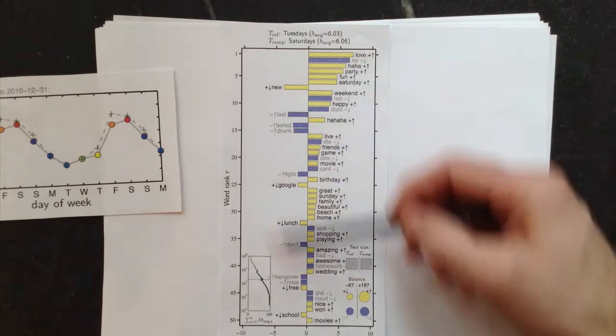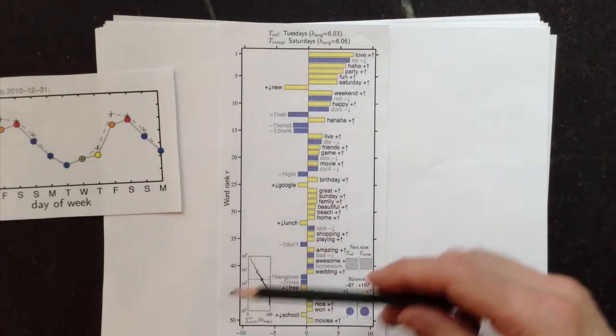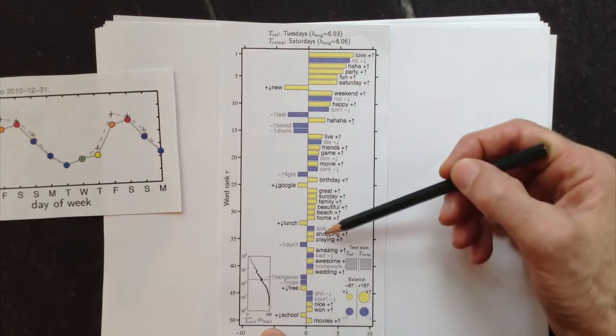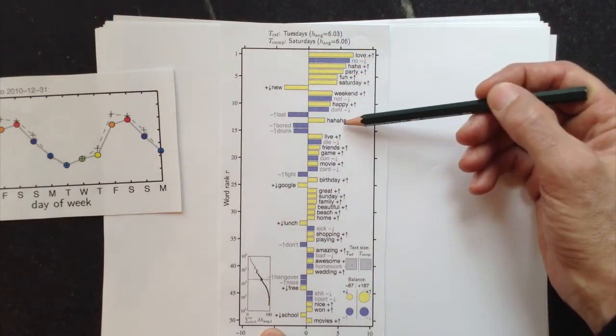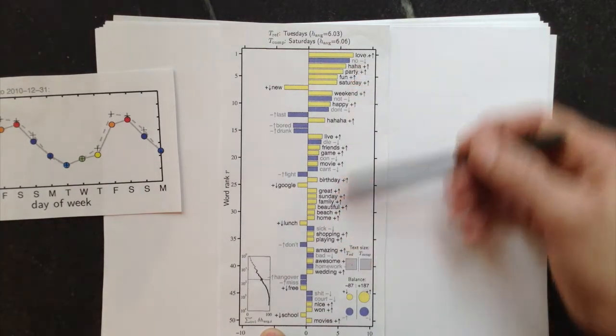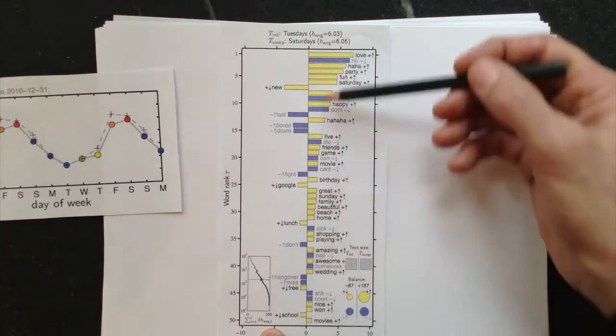And so there are four things that can happen to words as we move from one distribution to another. So we can have words that are positive relative to Tuesday being used more. So there's love, ha-ha-ha, fun and party, birthday, great, beautiful. They're all being used more, and they have the yellow bars, yellow for happiness.